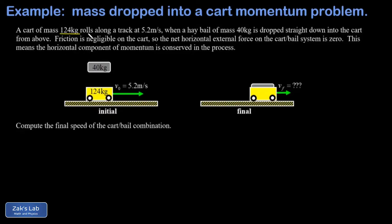We're given all the specs on this thing. The cart is 124 kilograms, the initial speed is 5.2 meters per second, and the hay bale has a mass of 40 kilograms.